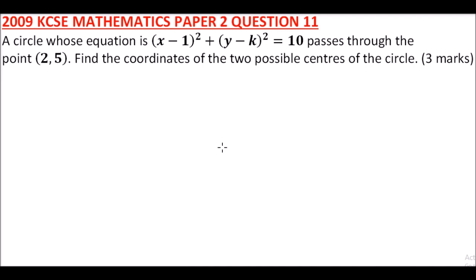We know in general the equation of a circle is (x - a)² + (y - b)² = r² where r is the radius, and we normally say that (a, b) is the center of the circle. So from my equation, since we have 1 here and minus k, it means the center is (1, k). So that is the center of the circle.